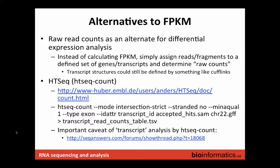Alternatives to FPKM exist — it's by far not accepted that this is the only way you should do things. There are two major camps. One is really probably led by the CuffLinks crowd. But there are a lot of other people that say, for differential expression analysis especially, you should just use raw read counts with the right statistics. Instead of calculating an FPKM, you just assign the reads or fragments to a defined set of genes or transcripts. This doesn't work if you don't know what the genes and transcripts in your genome are, but if you do — like in a human genome — you can determine the raw counts for each gene or transcript.